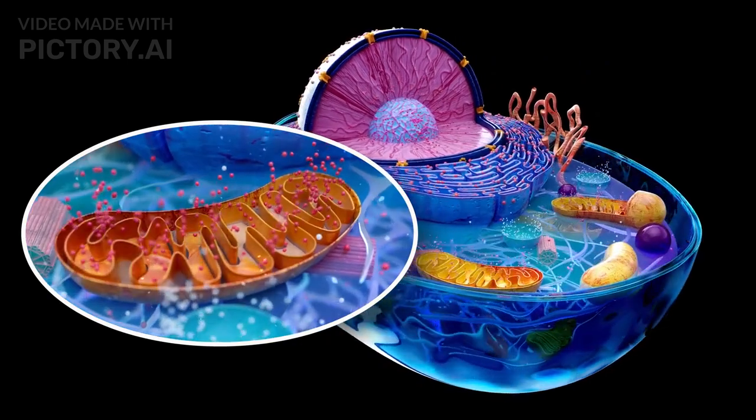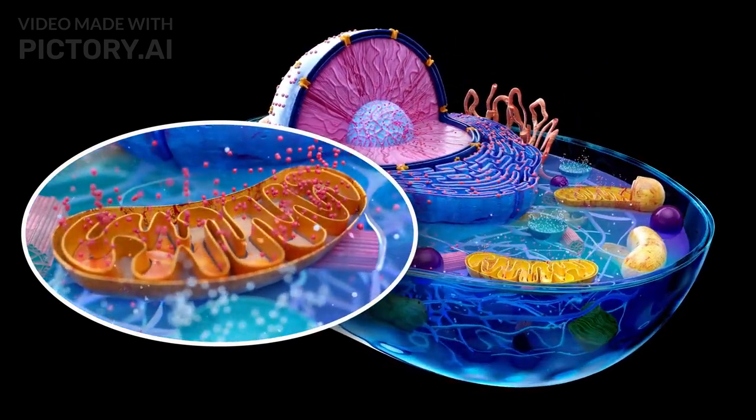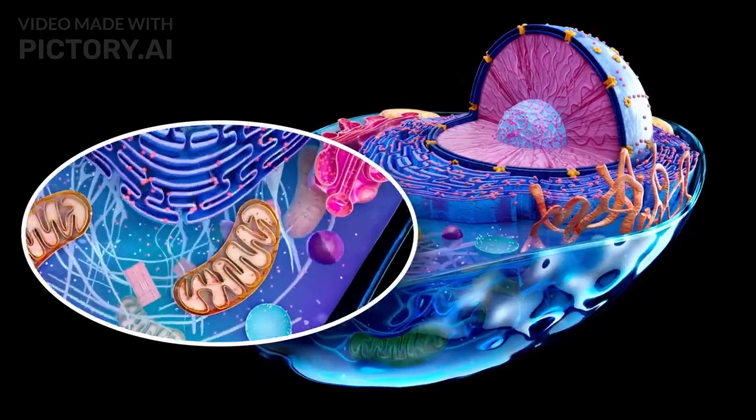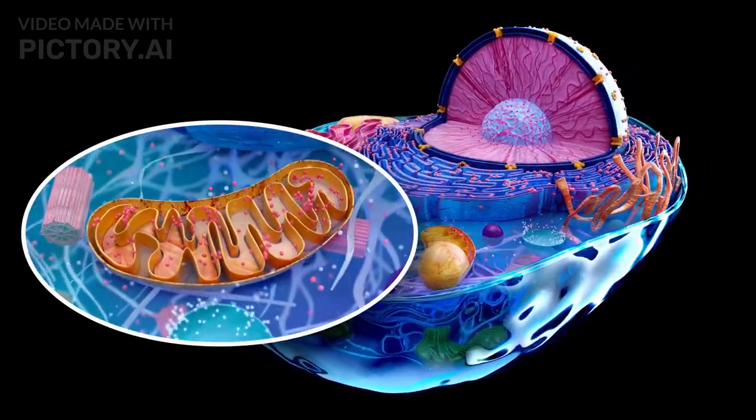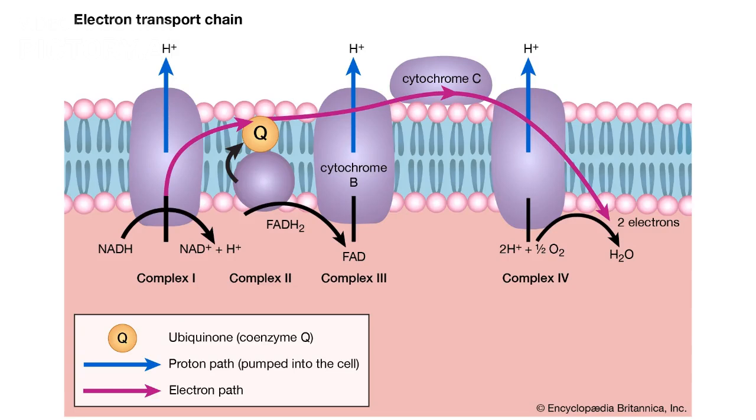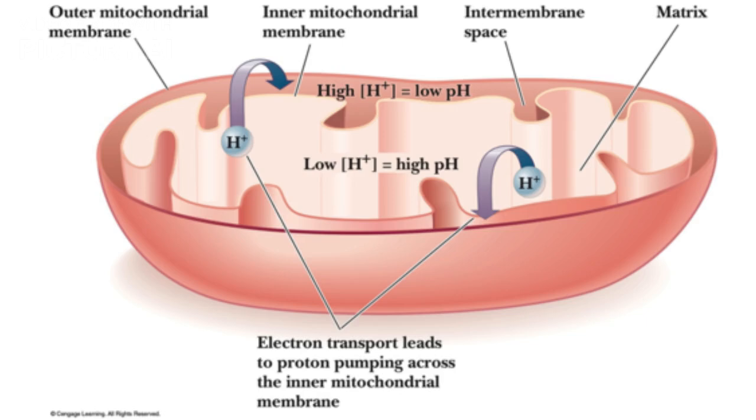Embedded within the inner membrane is the electron transport chain, a series of protein complexes essential for energy production. Energy production begins with NADH and FADH2, molecules generated during earlier stages of cellular respiration. These molecules donate electrons to the electron transport chain. As electrons move through the chain, protons are pumped from the matrix into the intermembrane space, creating a gradient.